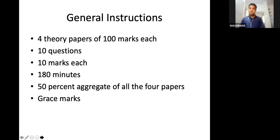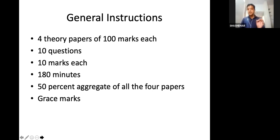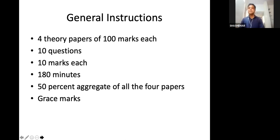Coming to general instructions, this is pertaining to DM Medical Oncology RGHS exams. Things can slightly vary between universities or between DNB and DM. Roughly there will be four theory papers of 100 marks each, each paper has 10 questions, each question carries 10 marks, and the time allotted is 180 minutes. Fifty percent aggregate of all four papers is a must to qualify for a pass.